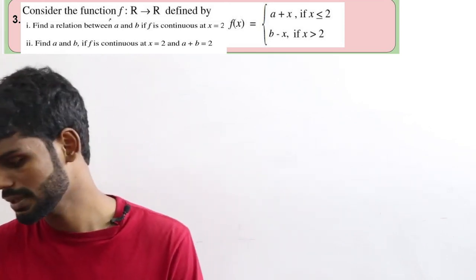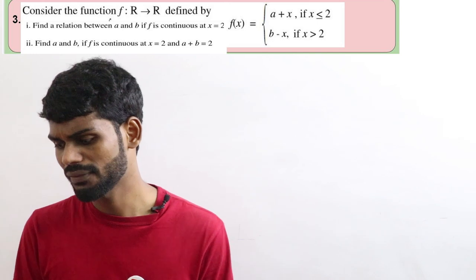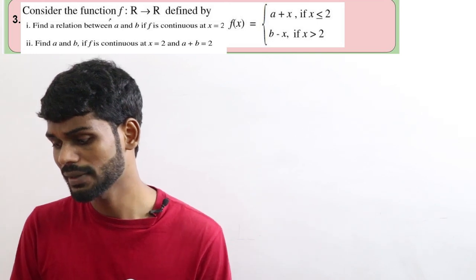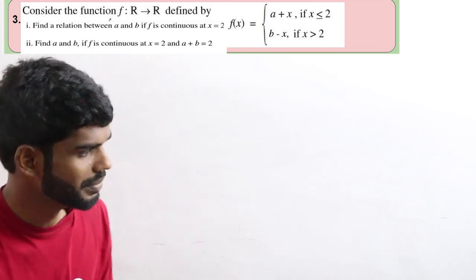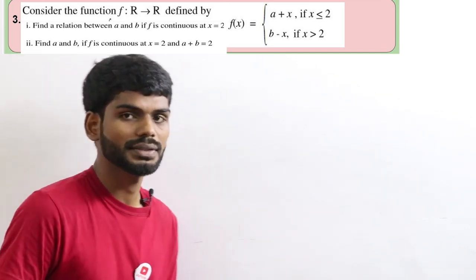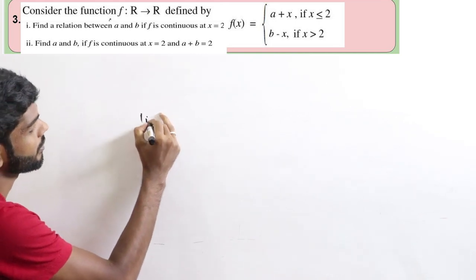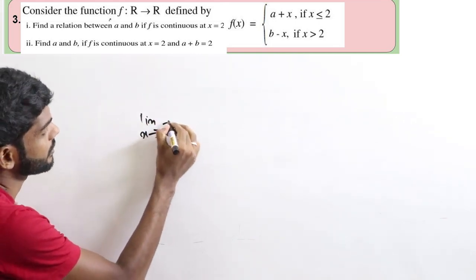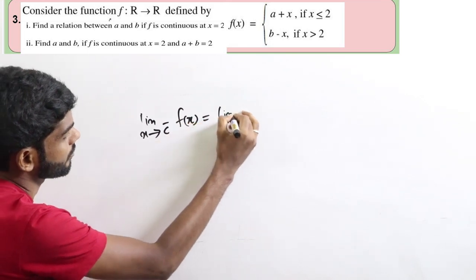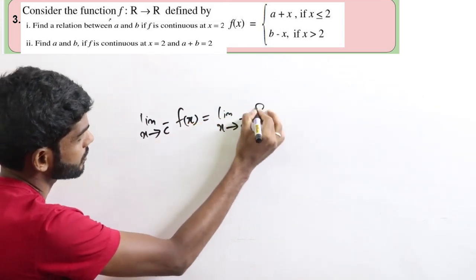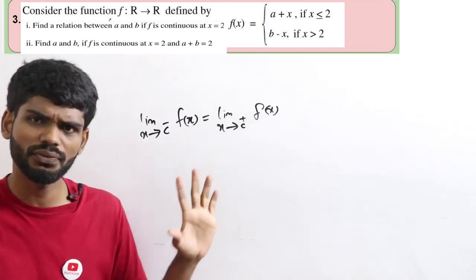If a plus b is given, and we have a plus b and b minus, this is a relationship between a and b. If the function is continuous at x equal to 2, we place the formula: limit x tends to c minus of f of x equal to limit x tends to c plus of f of x.